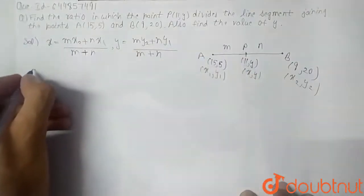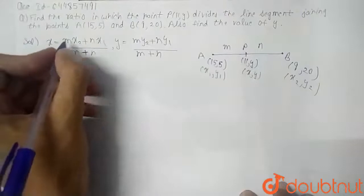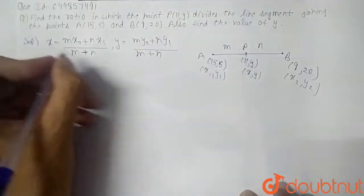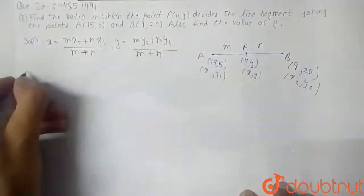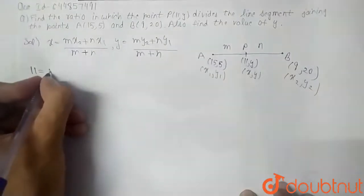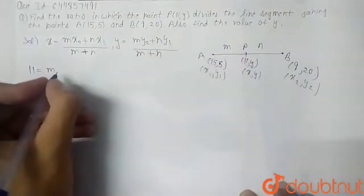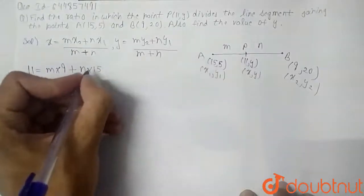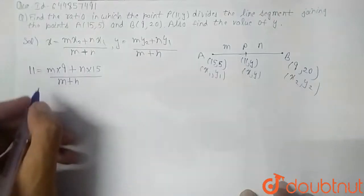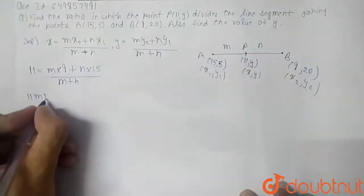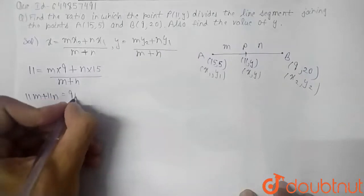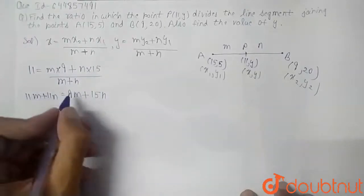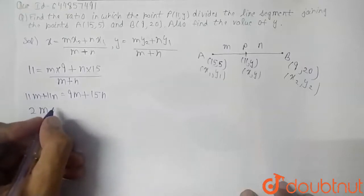We will use the x-coordinate formula to find the ratio m : n. Since x = 11, we write: 11 = (m·9 + n·15) / (m + n). Cross-multiplying gives 11m + 11n = 9m + 15n. Rearranging: 11m − 9m = 15n − 11n, which simplifies to 2m = 4n.